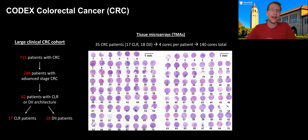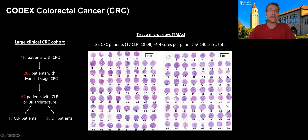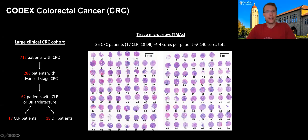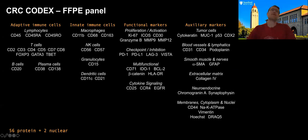We created tissue microarrays from these tumors using a next-generation digitized system, allowing us to precisely drill out specific structures such as follicles. We had four regions per patient at the tumor invasive front, resulting in 140 total cores. Starting from 715 patients, after selecting advanced-stage cases and excluding those with pre-operative chemotherapy, we ended up with 35 patients — 17 Crohn's-like reaction and 18 diffuse — and performed CODEX with a broad panel of antibodies covering adaptive and innate immune cells, functional markers like PD1/PDL1, and structural markers.